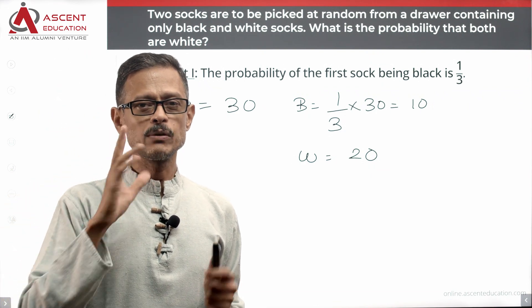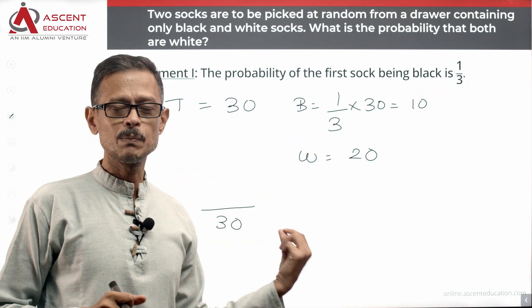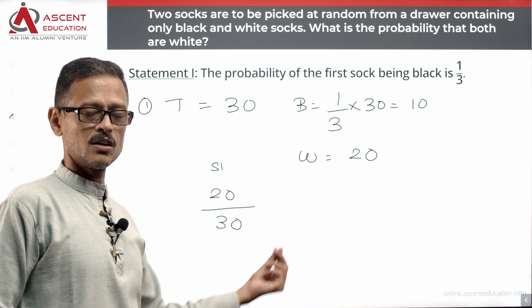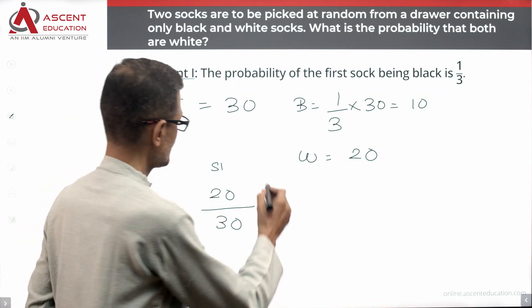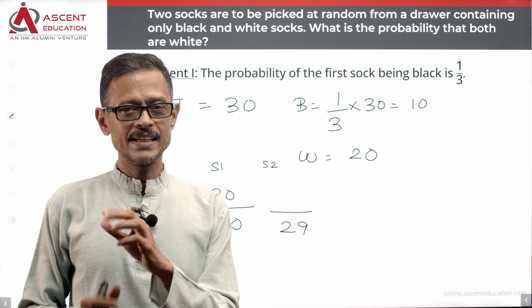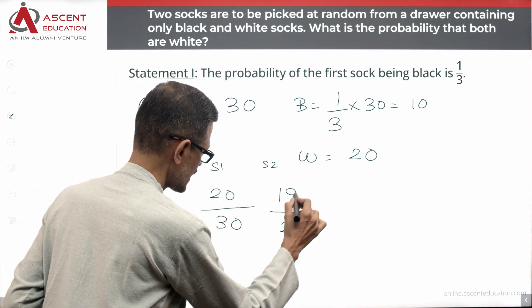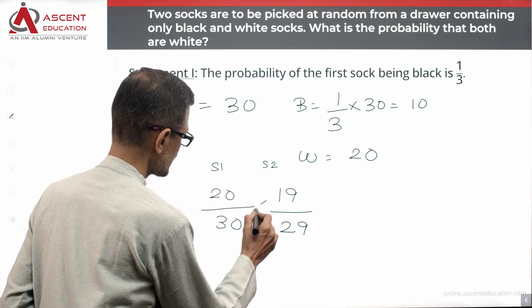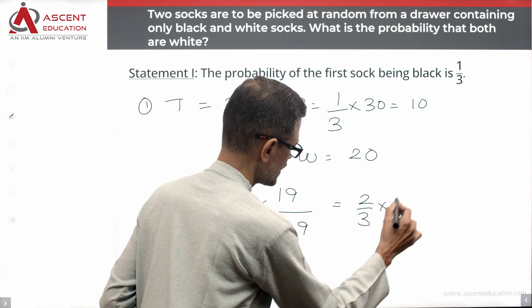We are picking two socks, both white. The probability that the first sock is white is 20 by 30. After picking one white sock, there are 29 socks remaining, of which 19 are white. So the probability that the second sock is white is 19 by 29. Therefore, the probability that both socks are white is 20 by 30 into 19 by 29, which simplifies to 2 by 3 into 19 by 29.